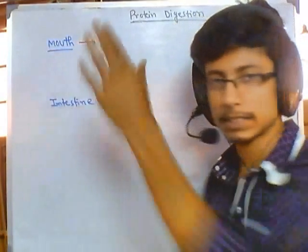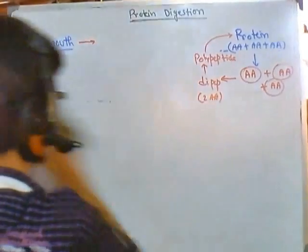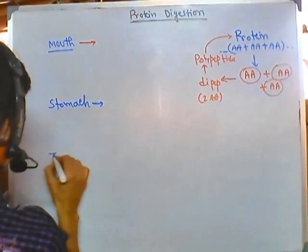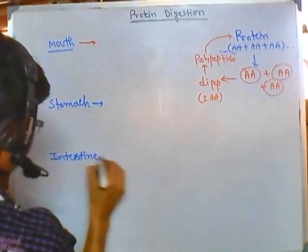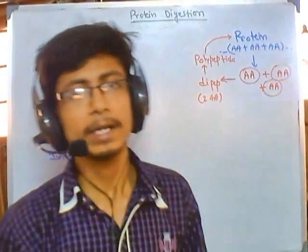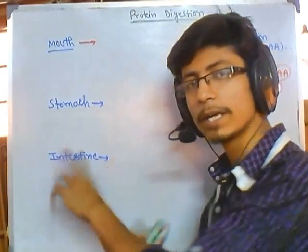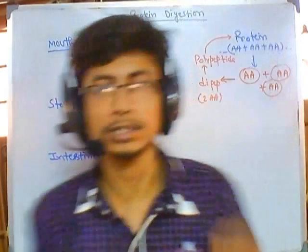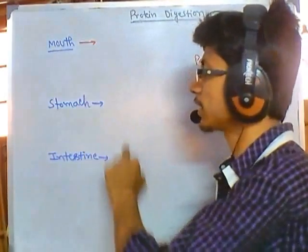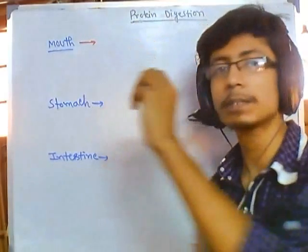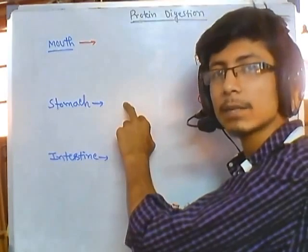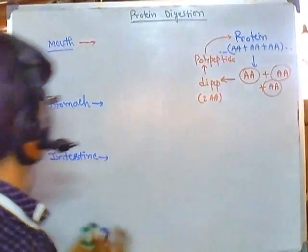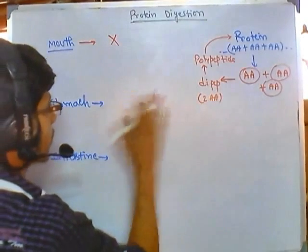Protein digestion begins with the mouth, then proceeds to the stomach, and then the intestine. All types of food — whether carbohydrate, protein, or fat — are taken care of in the intestine, as this is the major area where digestion and absorption occur. In the case of protein, digestion begins from the stomach. There is no activity in the mouth because there is no enzyme in saliva or any other substance in the mouth to digest protein.